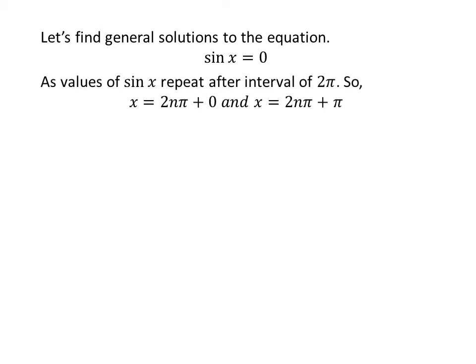Let us find the general solutions. As we know, the values of sin x repeat after the interval of 2π. So the general solutions are x = 2nπ + 0 and x = 2nπ + π where n is an integer.